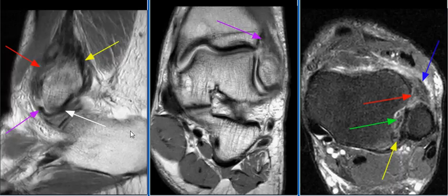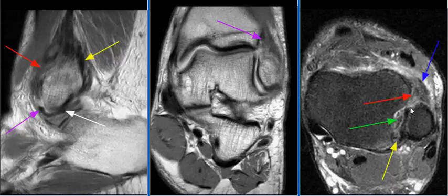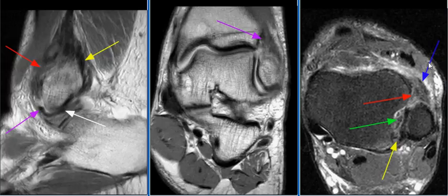MRI examination shows chronic tear and extensive scarring of the anterior syndesmotic ligament, as seen on this image with the red arrow. There is proliferative synovitis extending into the anterolateral gutter, as seen in this image with the blue arrow. The presence of scarring and proliferative synovitis in the anterolateral gutter is consistent with anterior syndesmotic impingement.